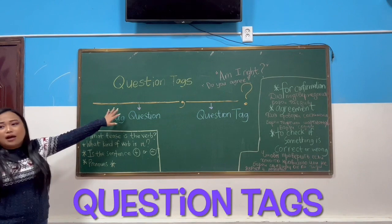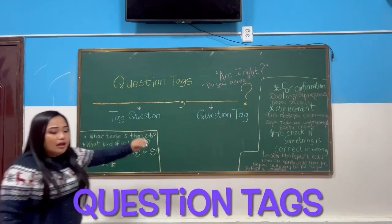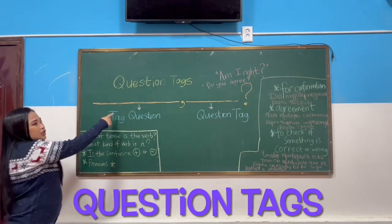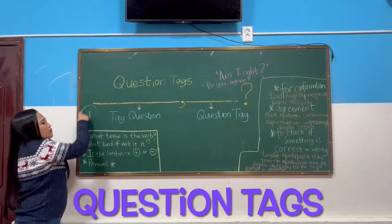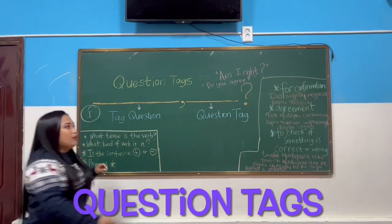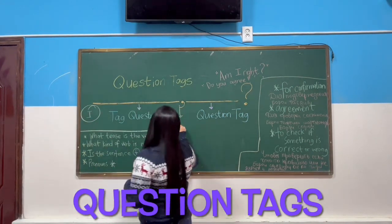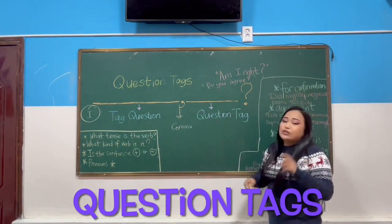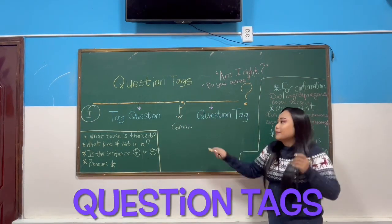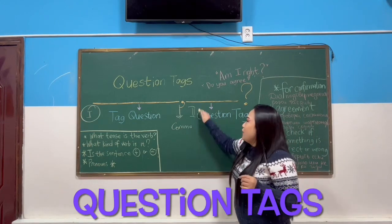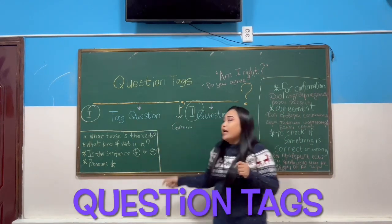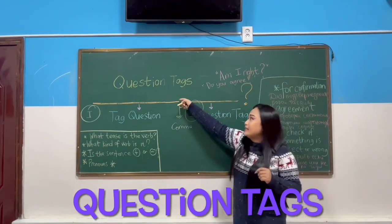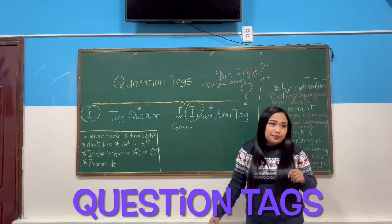Look at the board. We have two parts. Part number one is the Tag Question. After the comma — or 'virgul' — the second part is called the Question Tag. So the first part is called the Tag Question, and the second part is called the Question Tag, separated by a comma.